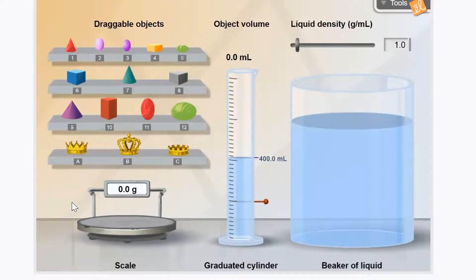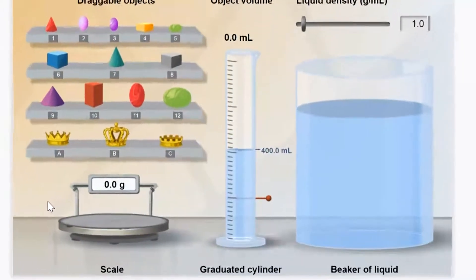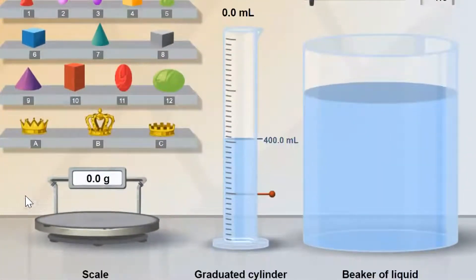and then the second part is that we can determine some facts about our objects. We have a scale to measure its mass in grams, and we have a graduated cylinder which is filled with 400 milliliters of fluid, and we can use this to figure out the volume of these irregularly shaped objects.